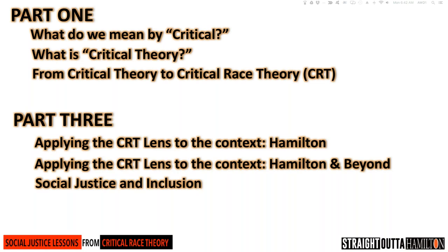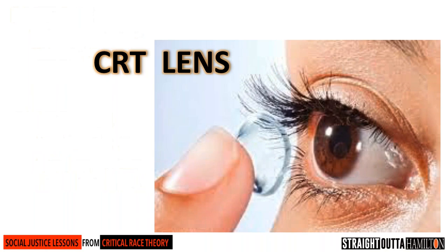Keep in mind, this is a three-part presentation. Here is the outline for parts one and three. I should look at what a lens actually does. A lens lets you see more clearly objects within your line of sight. The Critical Race Theory — or CRT — lens operates under that same premise.